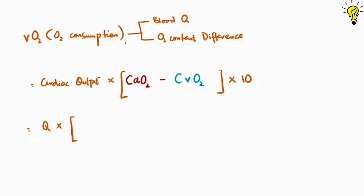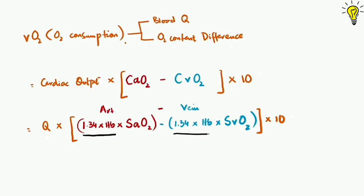Now further opening up the oxygen content equations for arteries and veins. If you see, the hemoglobin level and hemoglobin capacity for oxygen at 1.34 ml per grams would stay constant in both equations. So separating the common indices, we are left with this equation: cardiac output into hemoglobin into 1.34 into arterial oxygen saturation minus venous oxygen saturation into 10.